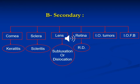Secondary causes means that the uveal tissue is not the primary focus of inflammation, but is a sequela of another inflammatory focus inside the eye, such as keratitis, scleritis, subluxation or dislocation of the lens, retinal detachment, intraocular tumors, or intraocular foreign body.